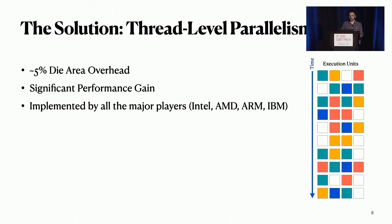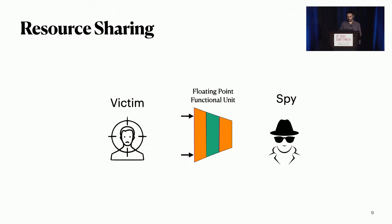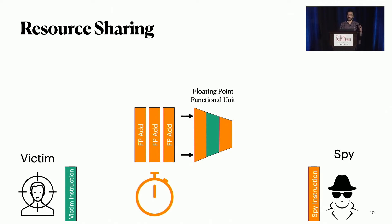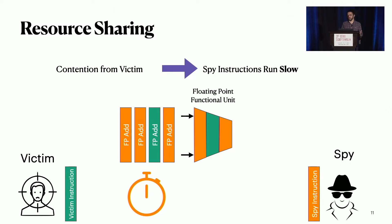That's why SMT has been implemented by virtually all the major players in the high-performance processor industry. But the problem is that now you have to share a lot of resources between the threads, which creates a security problem. For example, if you share your floating point functional units between threads, a malicious thread can spy on a victim thread. The attacker can monitor the timing of its own floating point instructions — if they run fast, there is no contention from the victim; if they run slow, the victim has executed a floating point instruction. This type of sharing allows an attacker thread to gain fine-grained information about a victim thread.